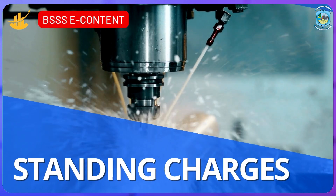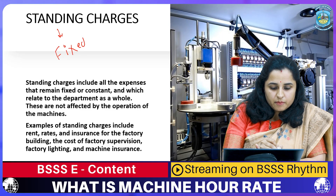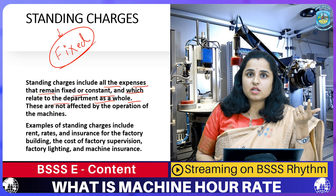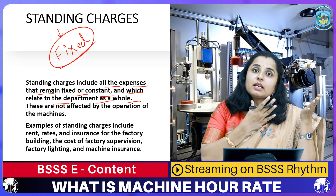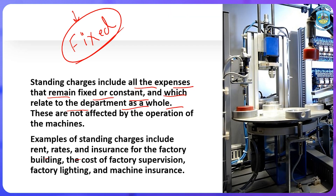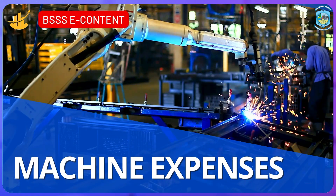Standing charges, as the name suggests, are fixed charges incurred in the factory. They include all expenses that remain fixed or constant and are related to the department as a whole — they do not affect the operations of a machine. Examples include rent, rates, insurance of factory building, cost of factory supervisor, factory lighting, and machine insurance.